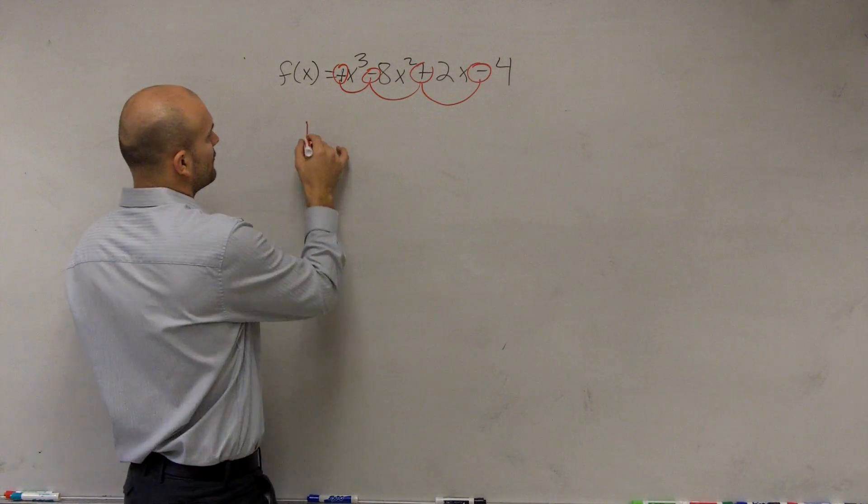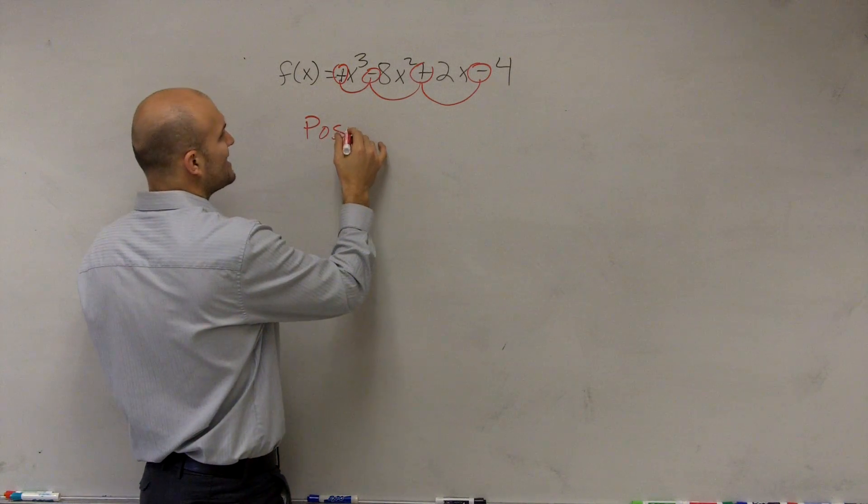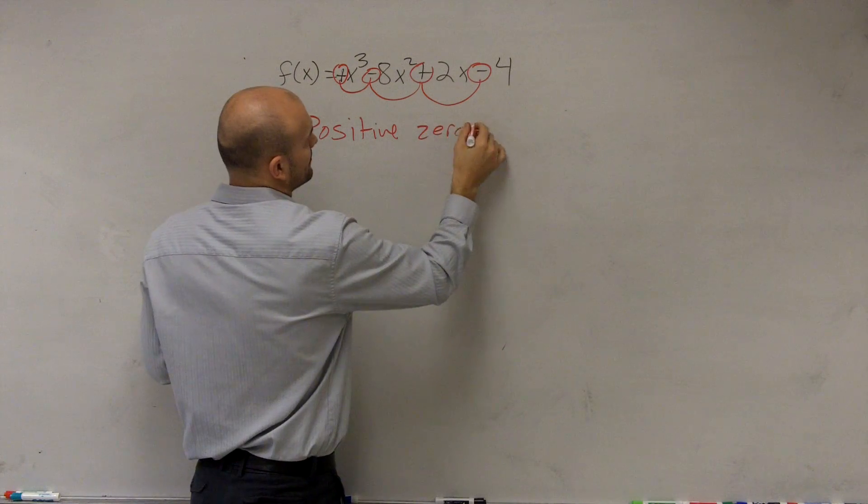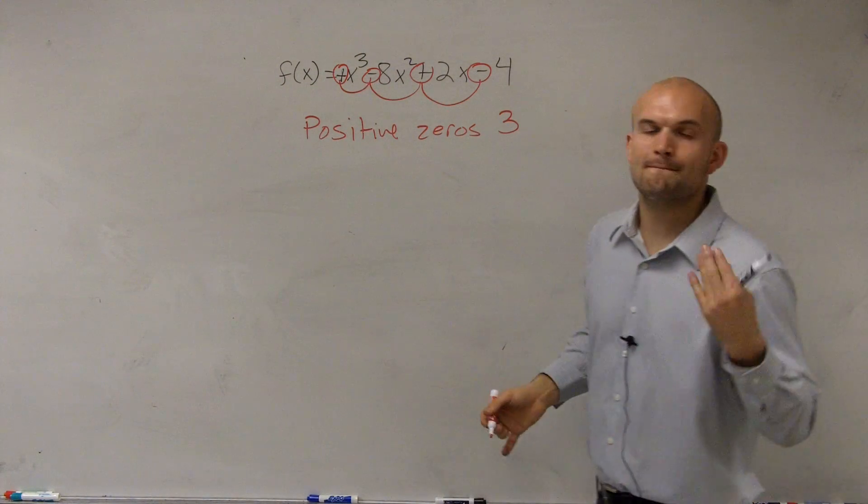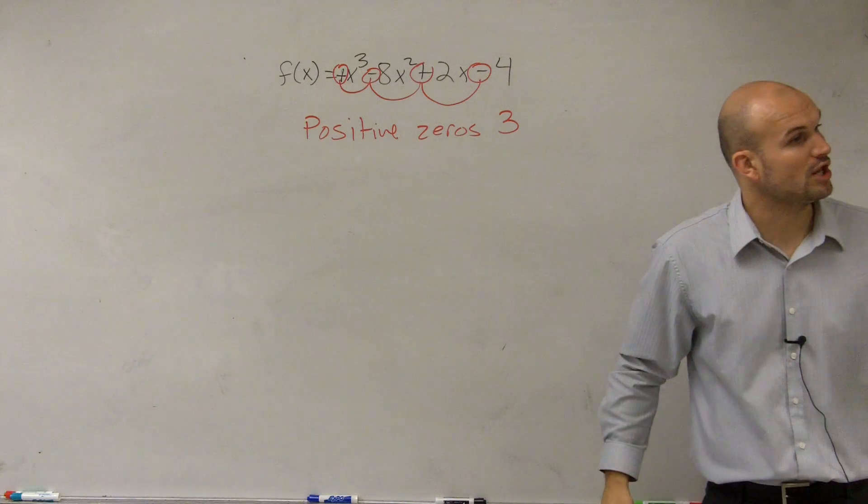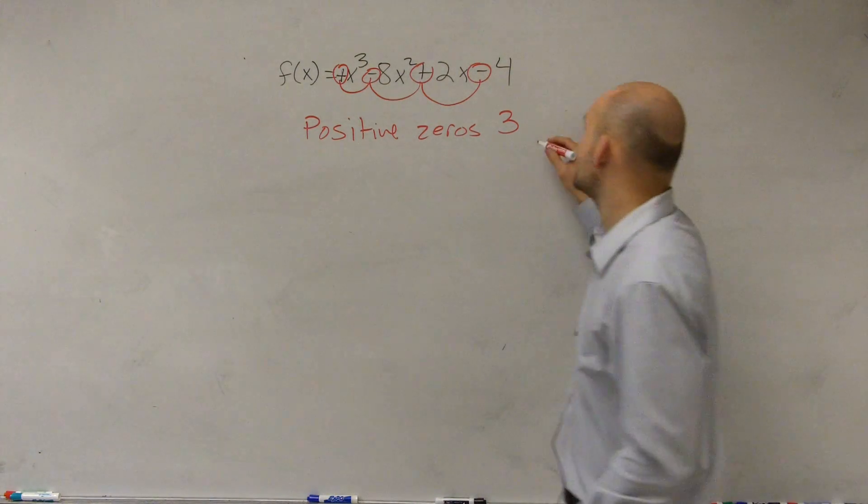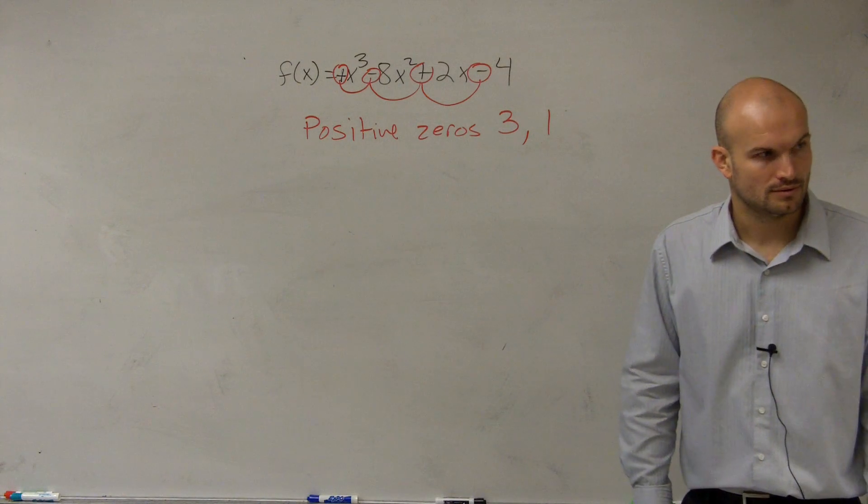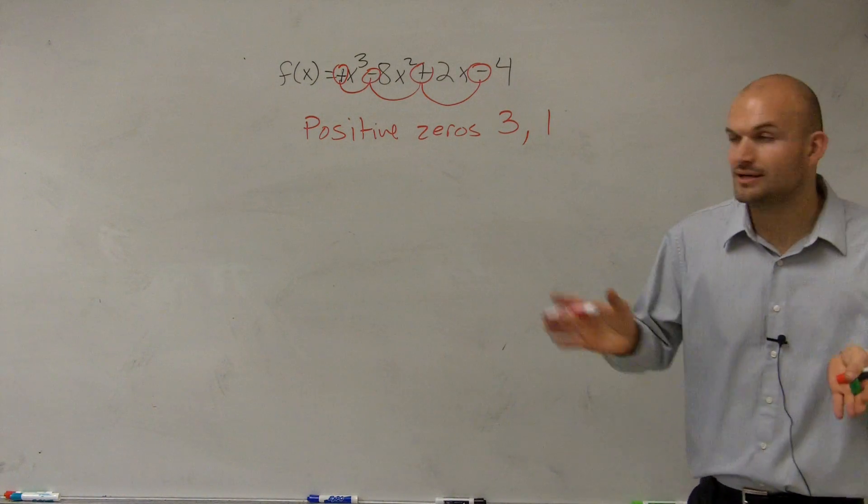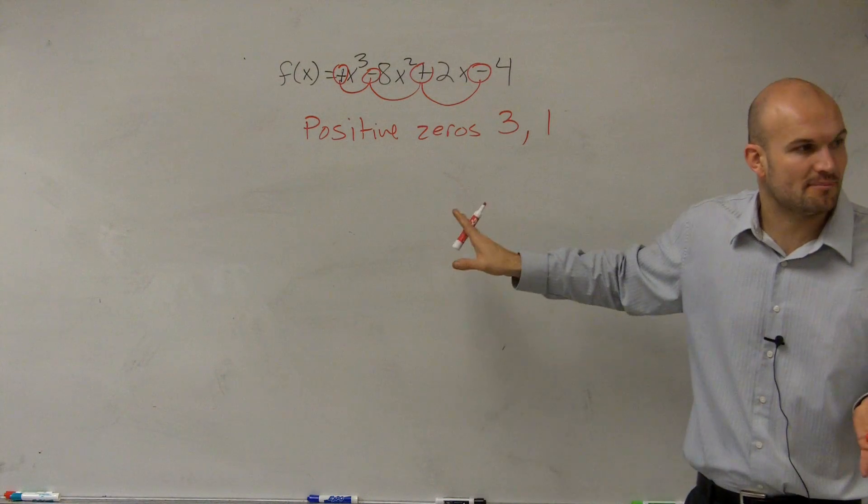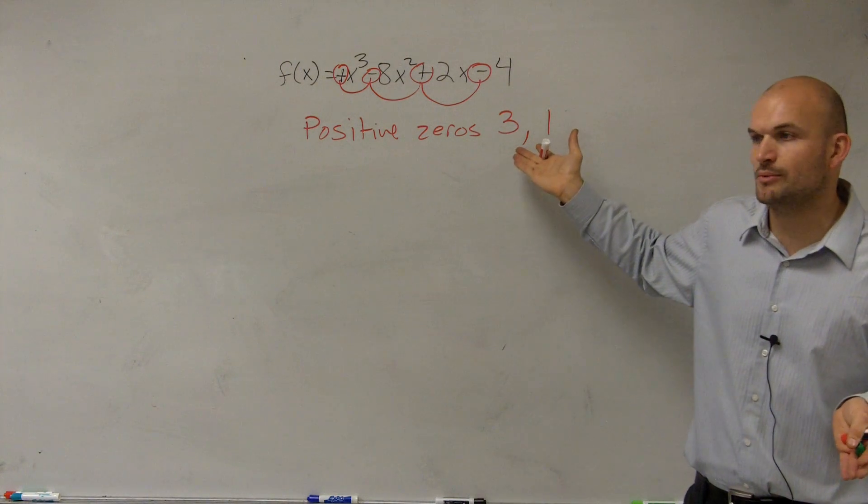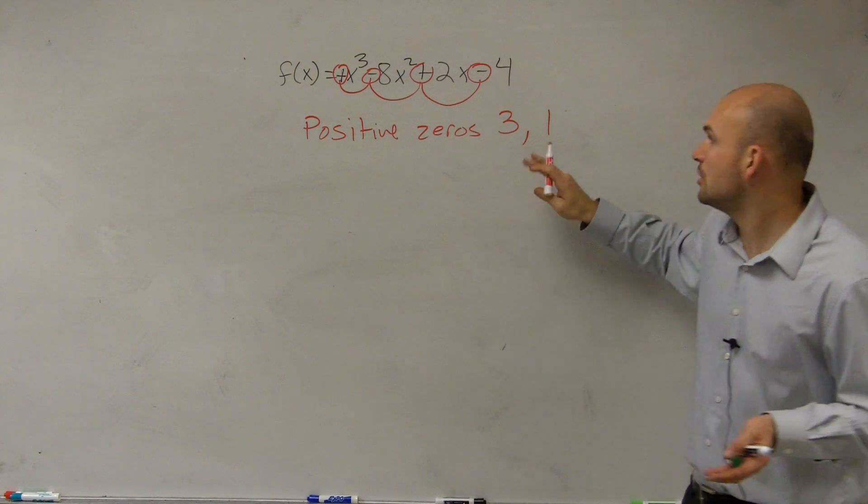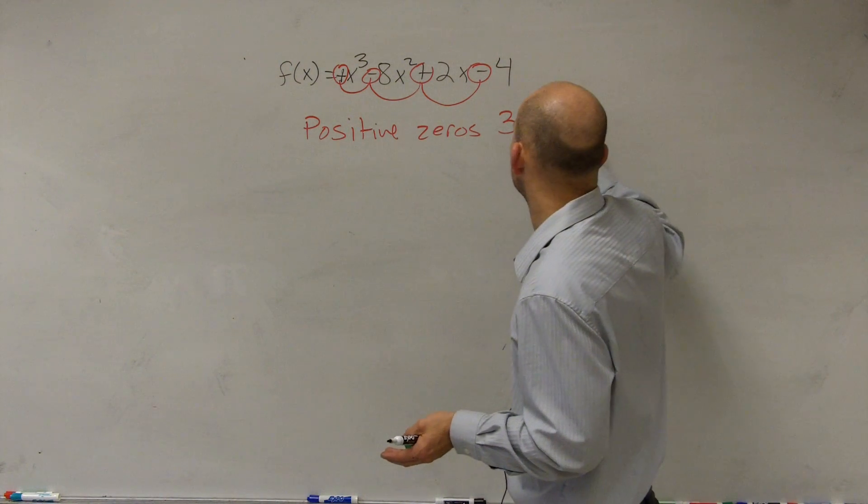So for the number of possible positive zeros, you have 3 or minus an even number, which the smallest even number is 2. So that means you either have 3 or 1. Because you have to take the number of sign changes and then minus an even number, which in this case, the smallest even number you can subtract from 3 would be 2. So it's either 3 or 1.